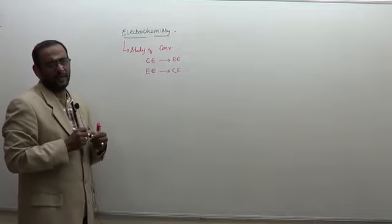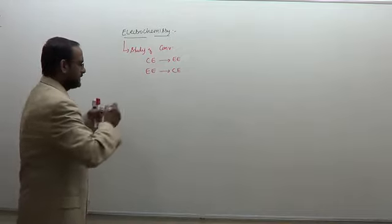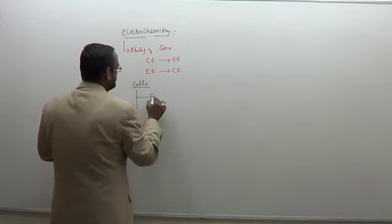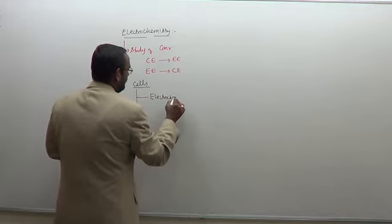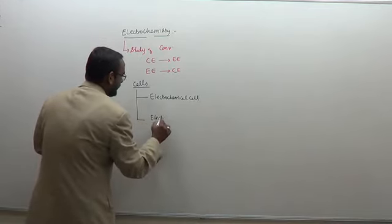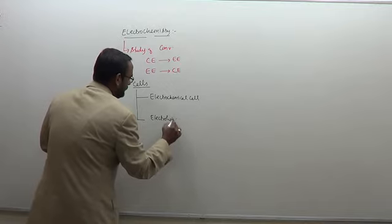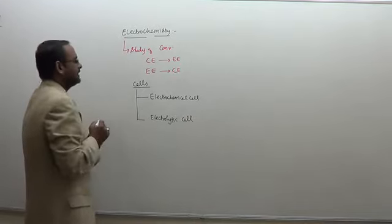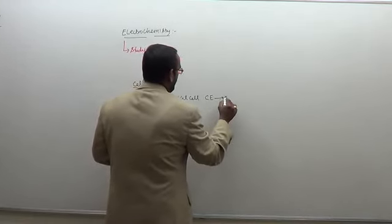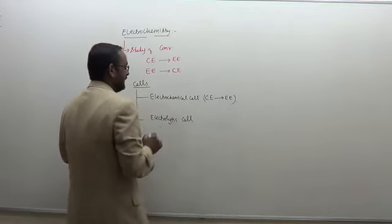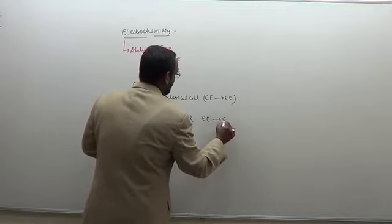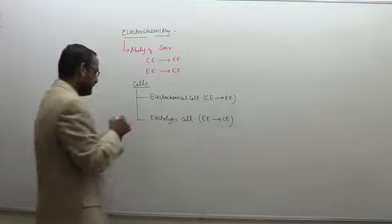In this topic we are going to deal with two types of cells. One is the electrochemical cell, and the other one is the electrolytic cell. In the electrochemical cell, chemical energy is converted to electrical energy. Whereas in the case of the electrolytic cell, electrical energy gets converted to chemical energy. That is the basic difference between the two types of cells.